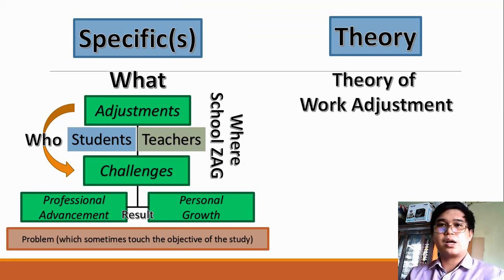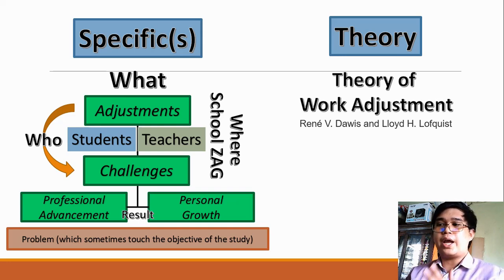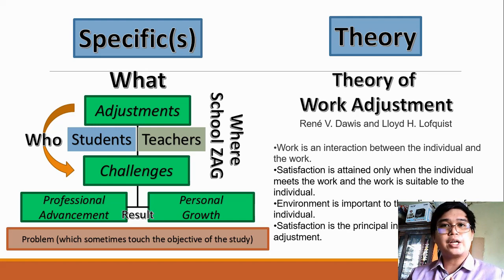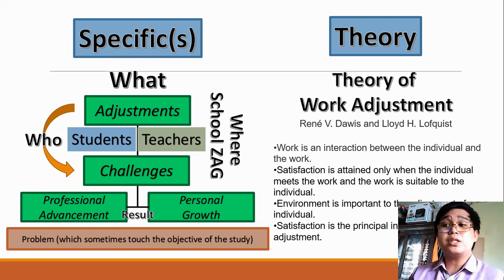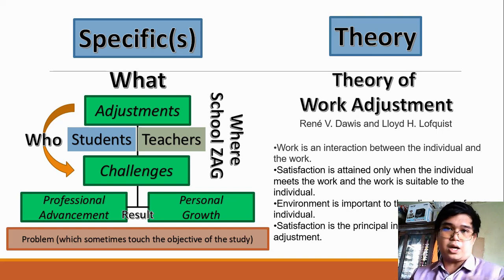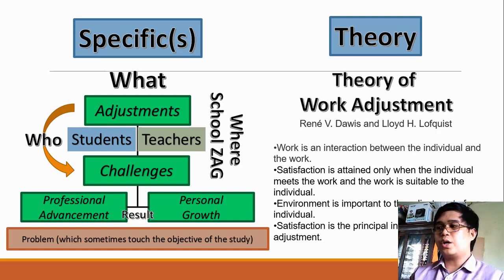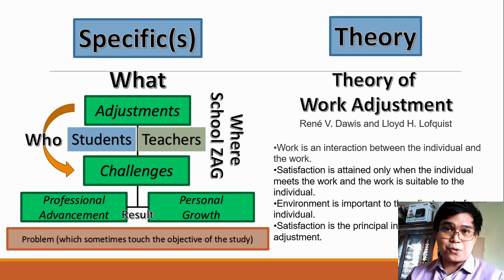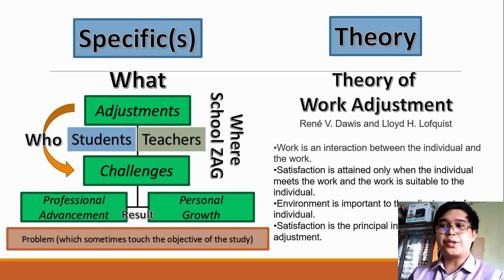In this example, I would like to use the Theory of Work Adjustment by Rene V. Davis and Lloyd H. Lofquist, in which according to them, work is an interaction between the individual and the work. Satisfaction is only attained when the individual meets the work and the work is suitable to the individual. Environment is important to the adjustment of an individual — in our case, we are confined in the four corners of our home, or as teachers, in the corners of our offices. So satisfaction is the principal indicator of work adjustment.